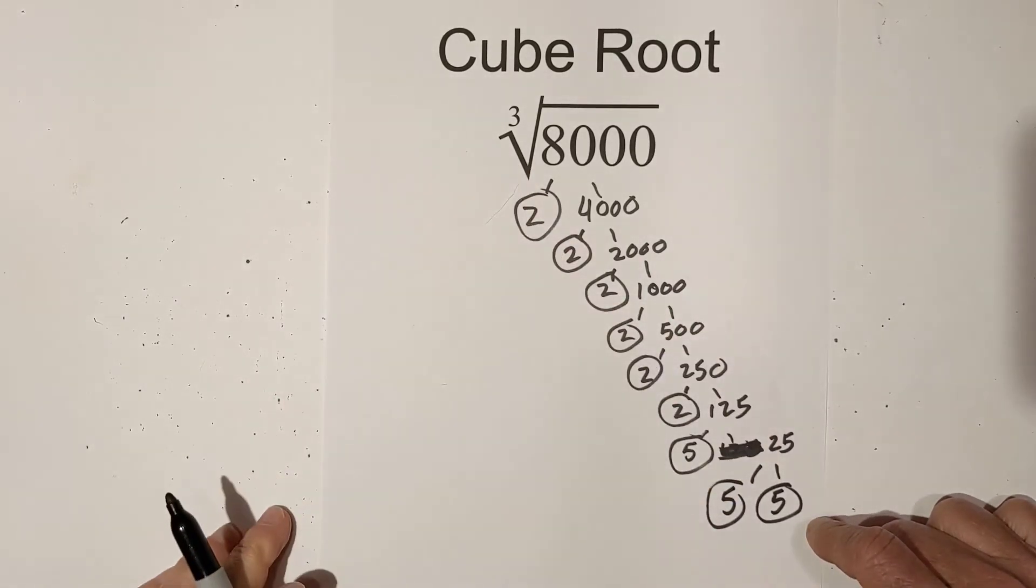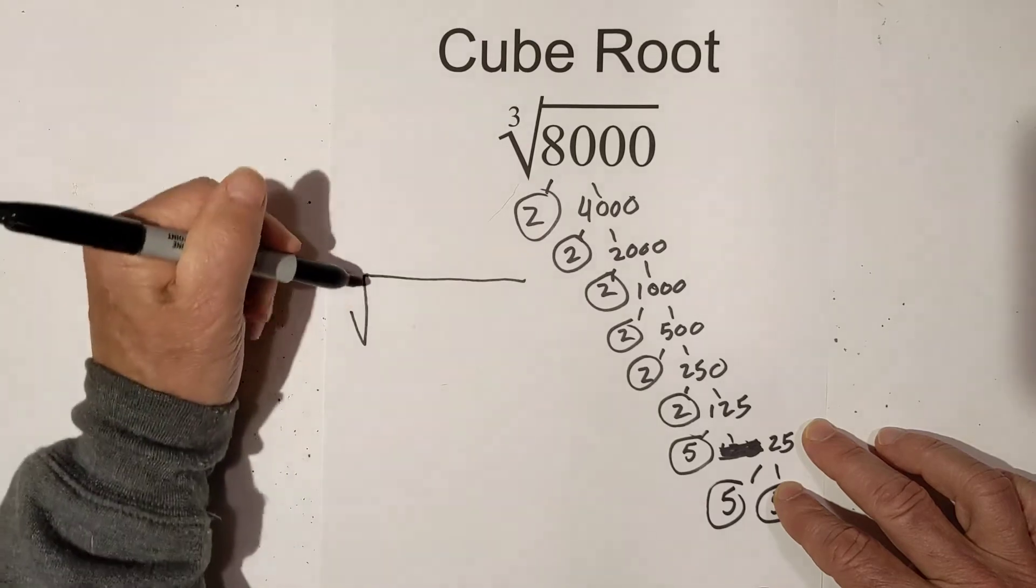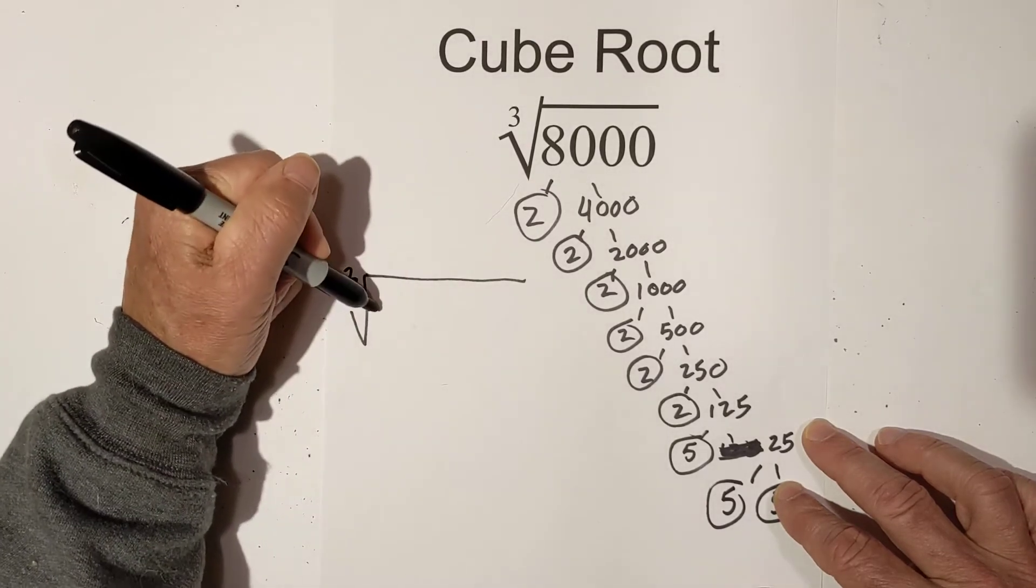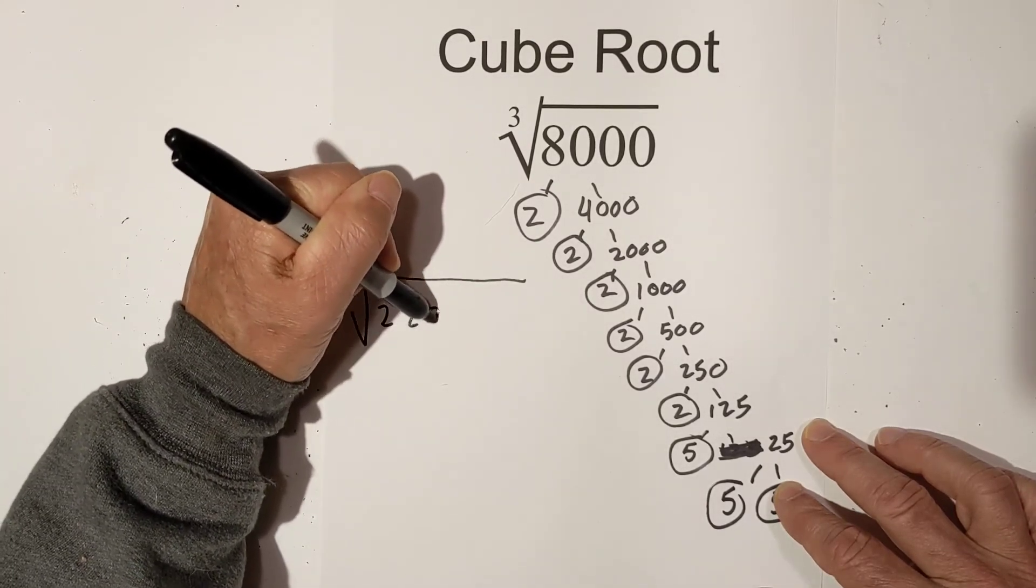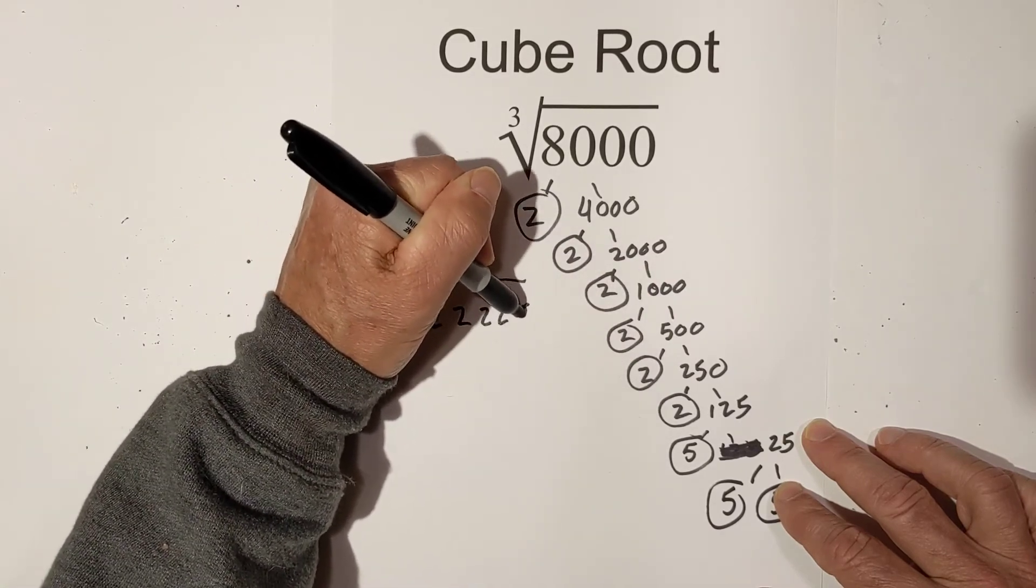So now what we do is place all these prime numbers under the cube root sign. We have a 2, 2, 2, another group 2, 2, 2, and then 3 fives.